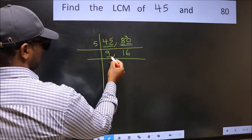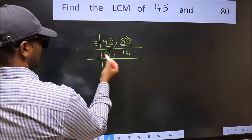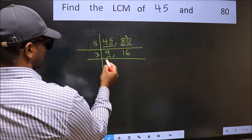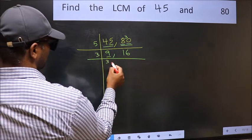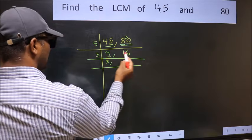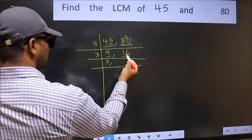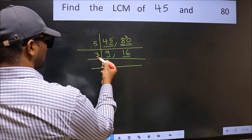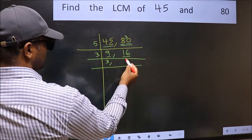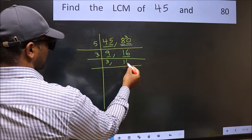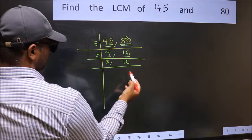Now here we have 9. 3 threes are 9. The other number is 16, which is not divisible by 3, so you write it down as it is.